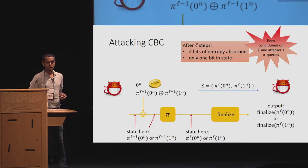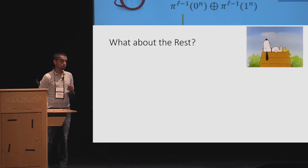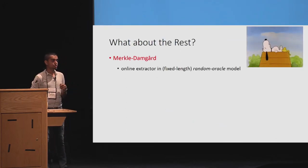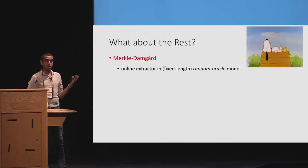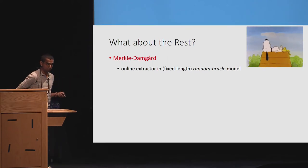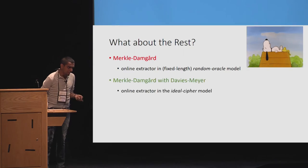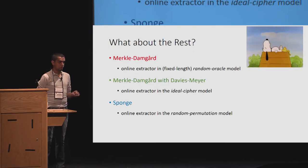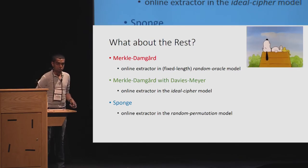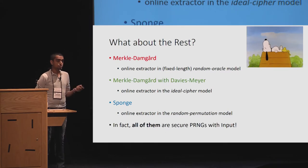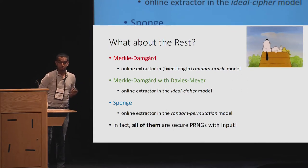Clearly we have attacked CBC and does that mean all of the other constructions crumble? What about the rest of them? We actually show that Merkle-Damgard is a good online extractor in the random oracle model. We show that Merkle-Damgard and an extension is seen. We can check our paper for extension to HMAC and HKDF. We show Merkle-Damgard with Davis-Mayer is an online extractor in the ideal cipher model. We also show that the sponge is an online extractor in the random permutation model. And actually all of them are PRNGs with input.